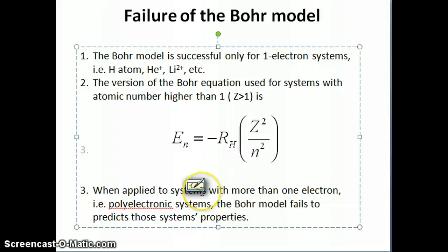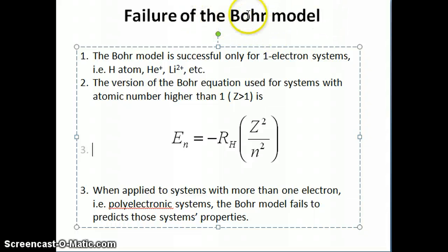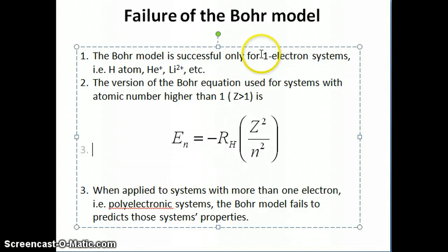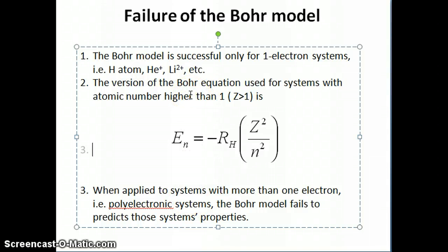The Bohr model, even though we spent considerable time discussing it, is actually not the model we'll end up using to describe properties of atoms in general. The reason is that the Bohr model fails when used to calculate properties of systems with more than one electron. The hydrogen atom is the simplest possible system — a one-electron system. Everything else in the periodic table, starting from helium, lithium, and so on, are poly-electronic systems because they all have more than one electron.